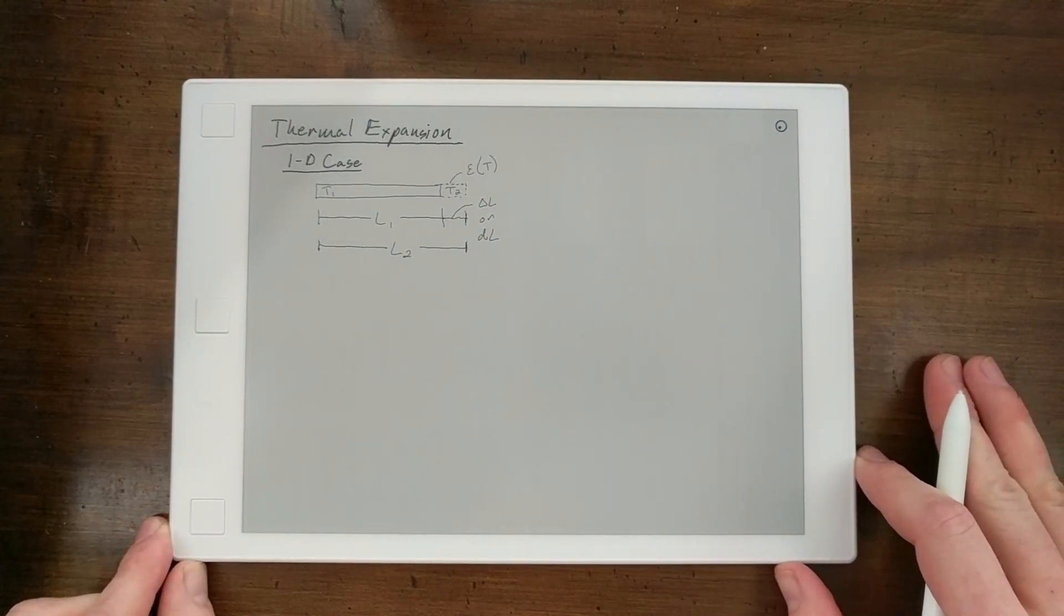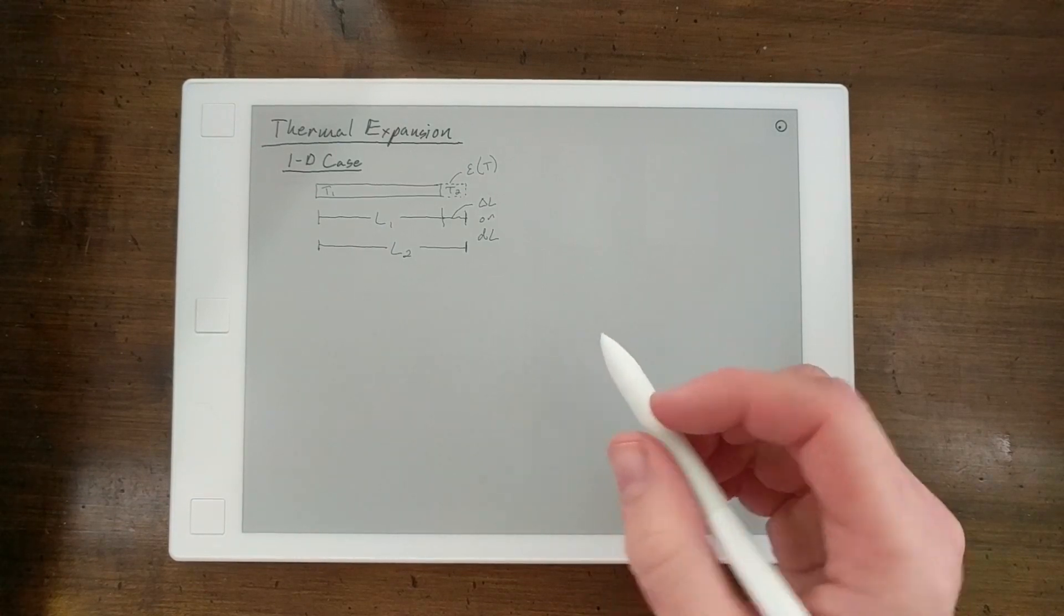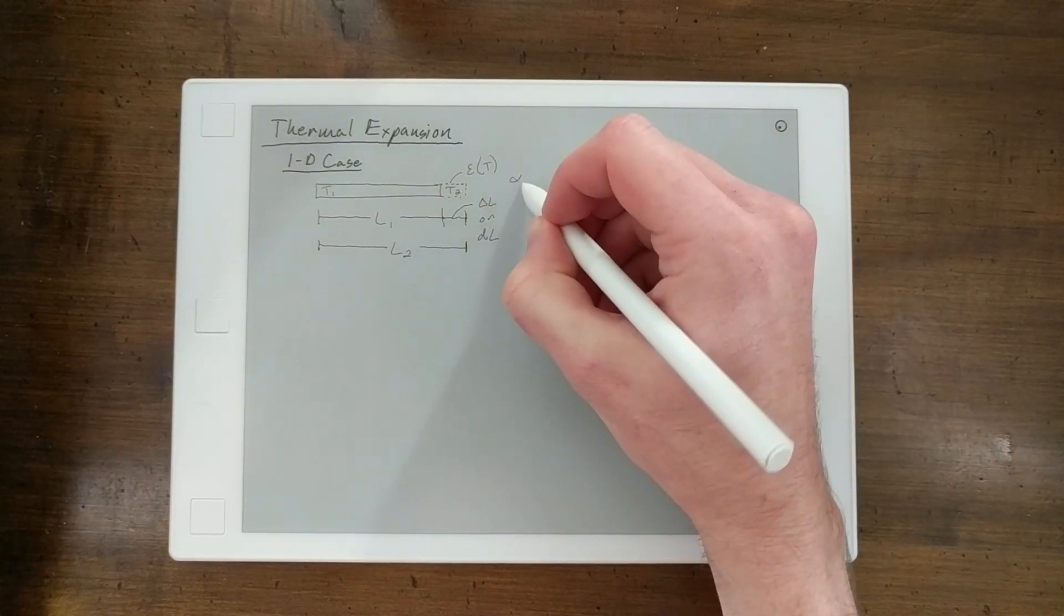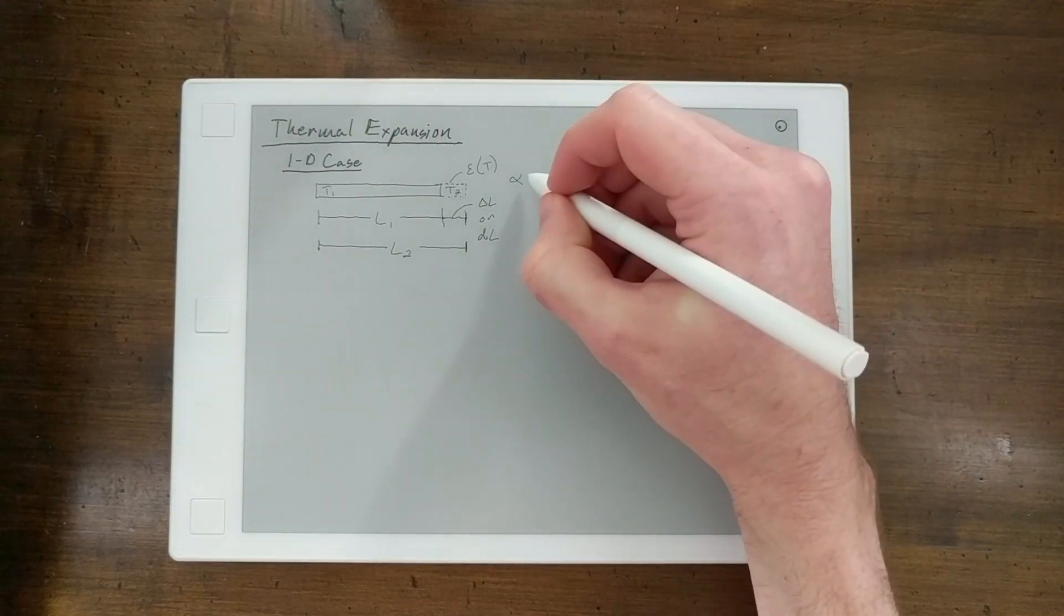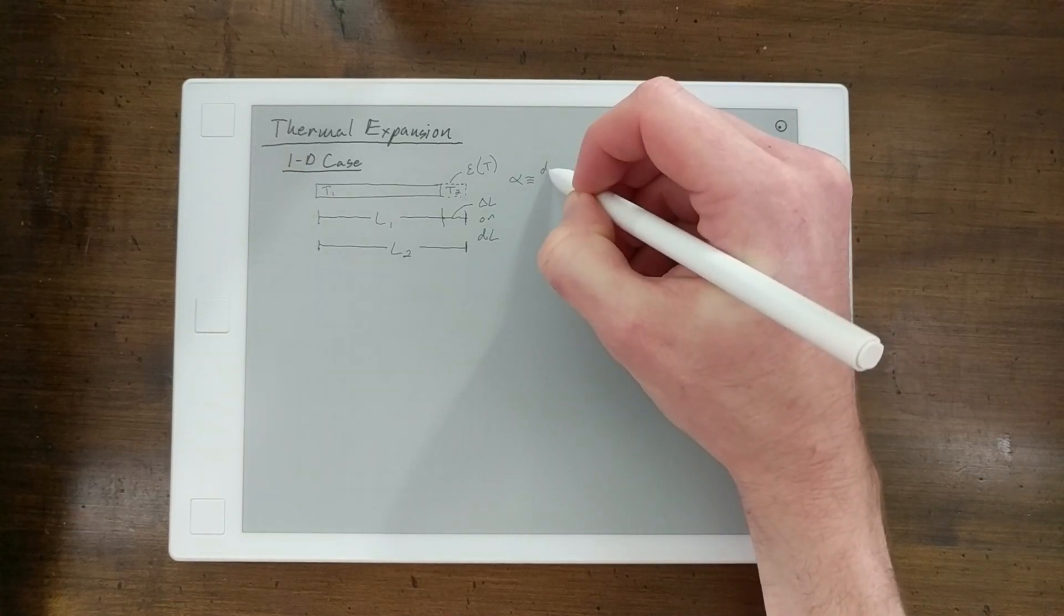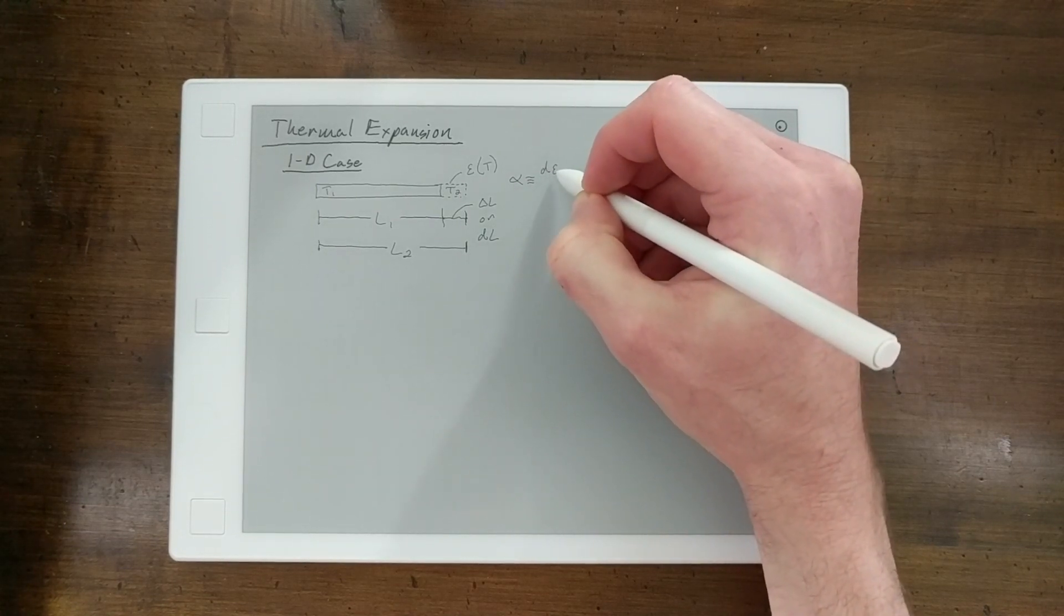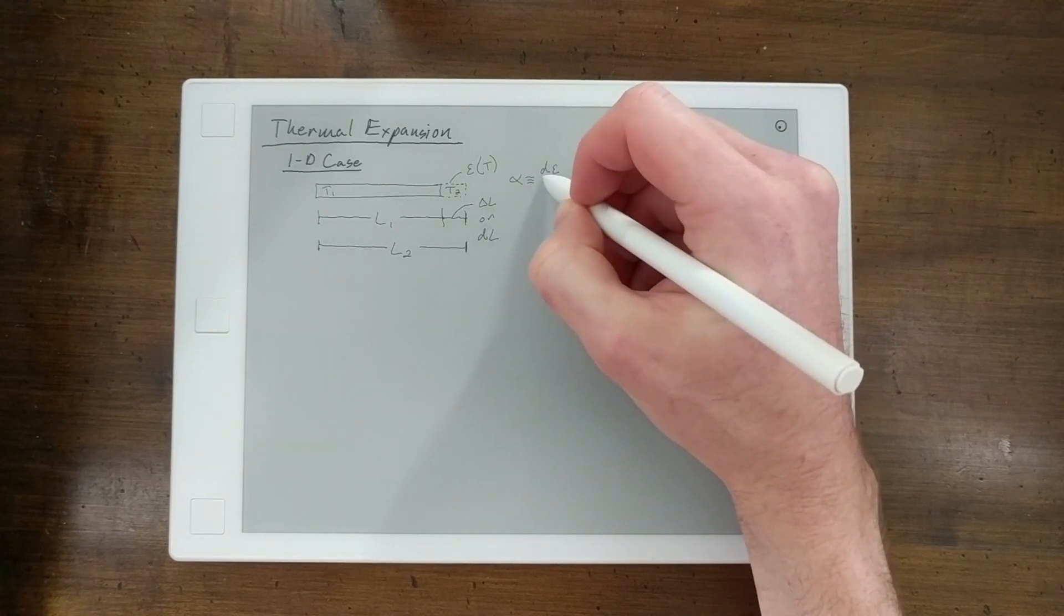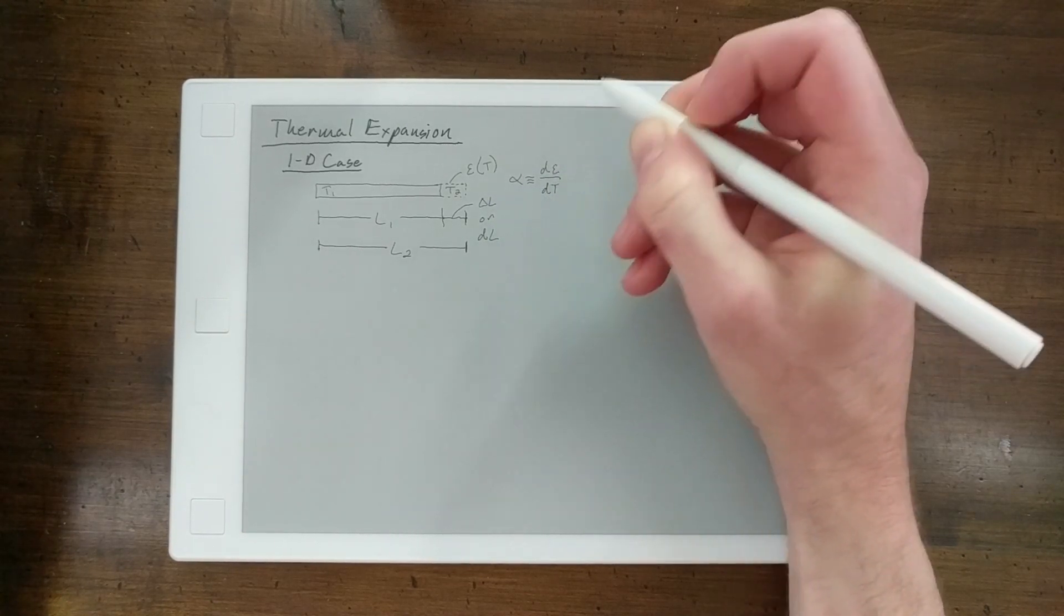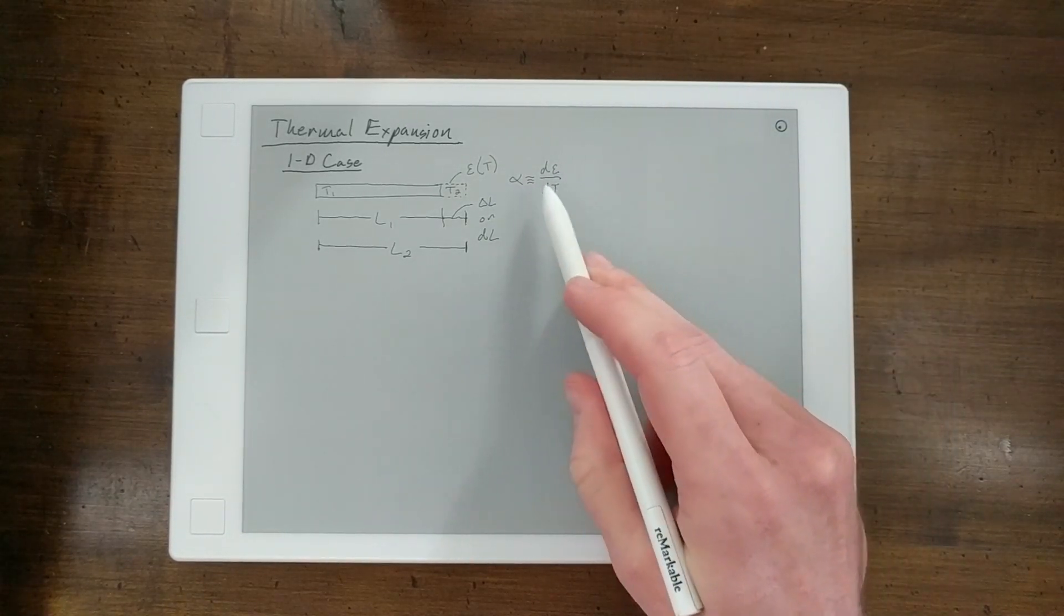So we introduce a quantity called thermal expansion coefficient alpha. And alpha is defined to be the incremental change in the strain with the incremental change in temperature. So it's a differential.